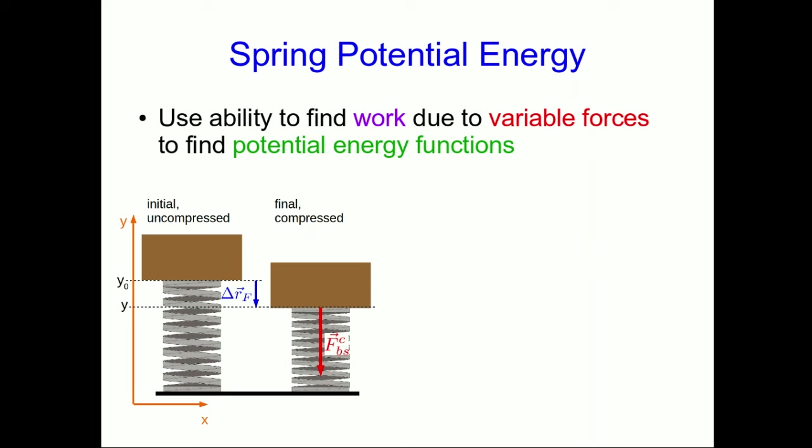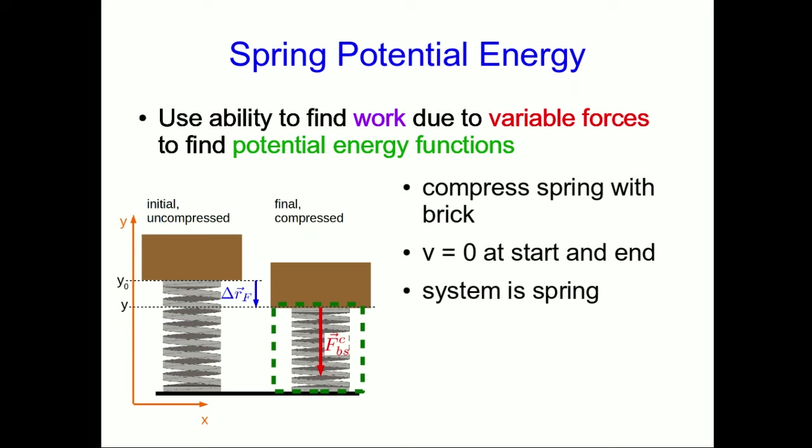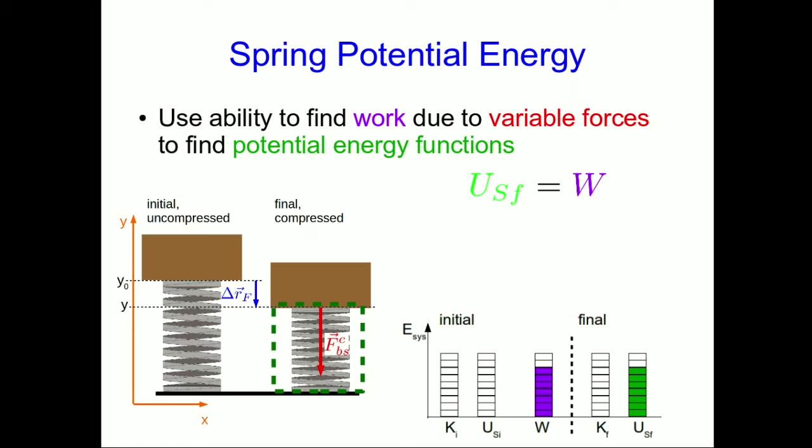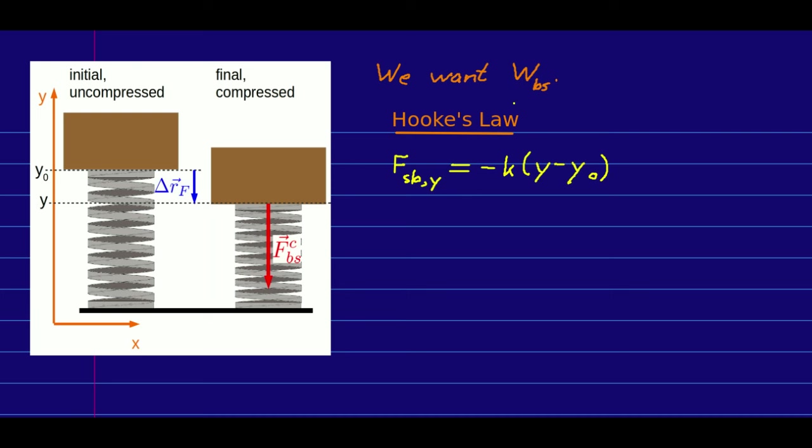We can use our newfound ability to find work due to variable forces to find potential energy functions. And so as an example, let's do that for spring potential energy. So we'll think about compressing a spring with a brick, a very familiar situation. The brick is going to be stationary both at the start and the end of the process, and the system is the spring alone. And so that means there's no change in the kinetic energy. And all that happens is that external work is done by the brick and the system gains spring potential energy. And so that just says that the final spring potential energy is equal to the work done on the system. And that work done on the system is work by the brick on the spring.